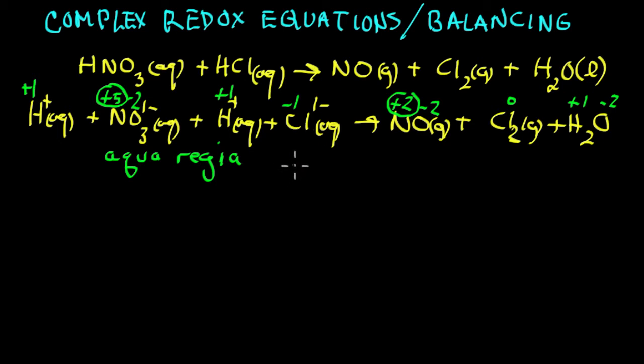We're going to write the half reactions first. The chloride ion has gone from a minus one oxidation number to a zero. And we have to balance the atoms. We're going to put two here.